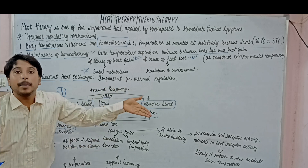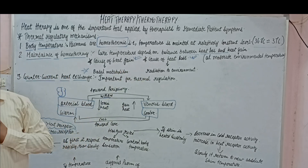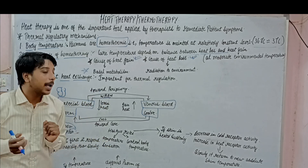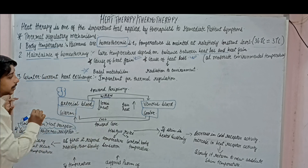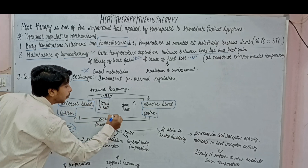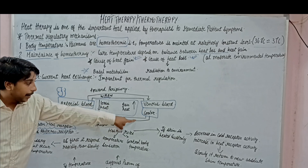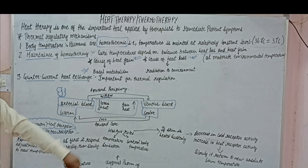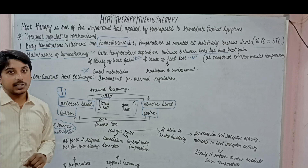So venous blood returning from the distal part is cool because there can be some drop in temperature due to heat loss from the distal part — to maintain the core temperature. When arterial blood and venous blood are in proximity, there is a heat exchange: the warm arterial blood loses heat and the cool venous blood gains heat, working together to maintain the normal or near-normal level of body temperature at the core. This is the counter-current heat exchange mechanism.